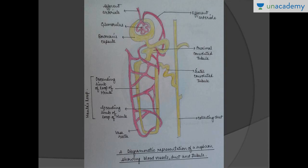I'd like to ask you what a nephron is. The nephron, or uriniferous tubule, is basically the structural and functional unit of the kidney. It's all these nephrons which combine together and help the kidney in forming urine. The two human kidneys contain about a million of these nephrons.